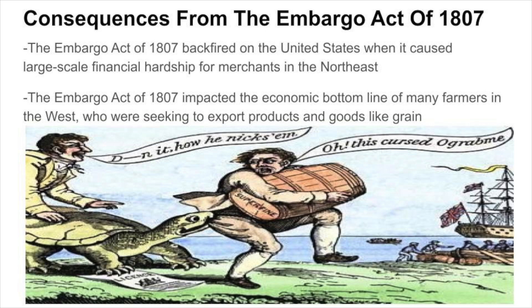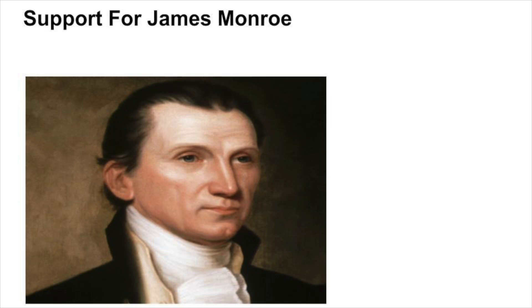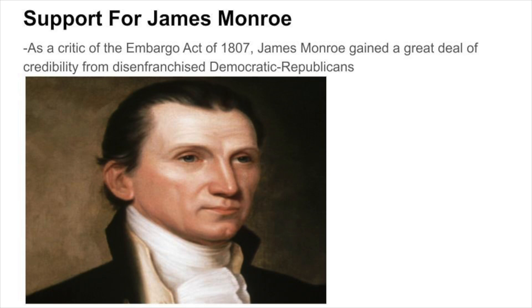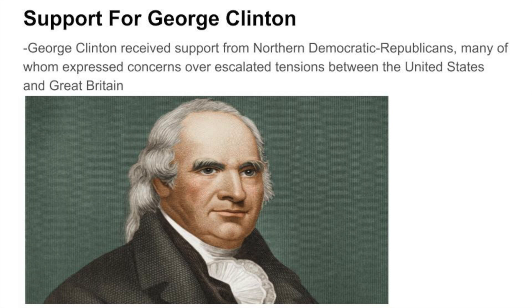The Embargo Act of 1807 also impacted the economic bottom line of many farmers in the West, who were seeking to export products and goods like grain. This led James Monroe, a critic of the Embargo Act of 1807, a great deal of credibility with disenfranchised Democratic-Republicans. Additionally, incumbent Vice President George Clinton received support from Northern Democratic-Republicans, many of whom expressed concerns over escalated tensions between the United States and Great Britain.